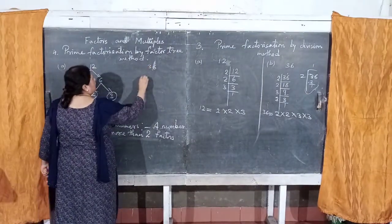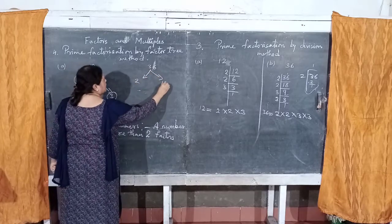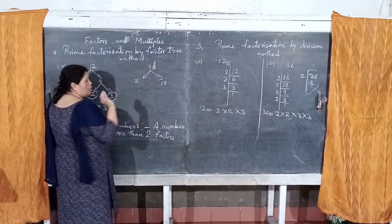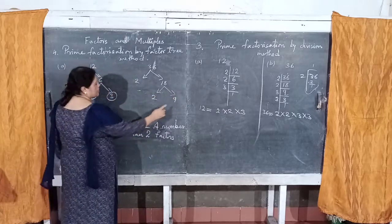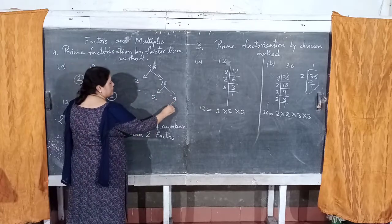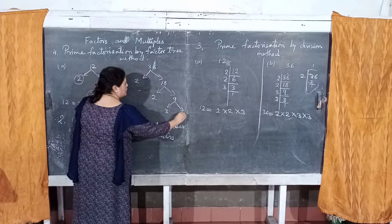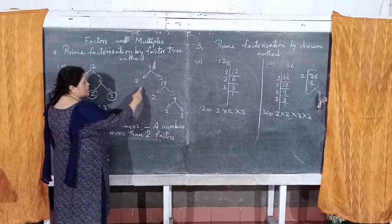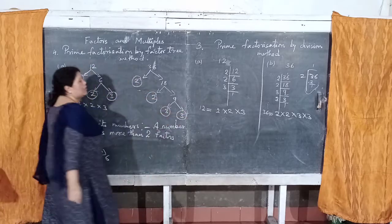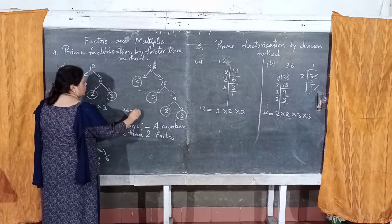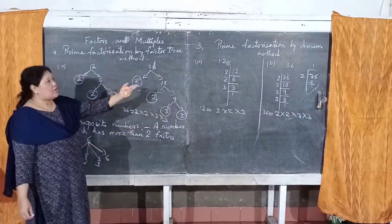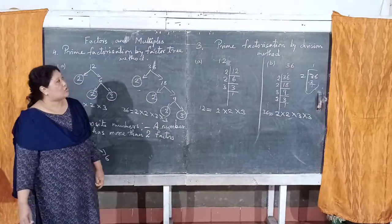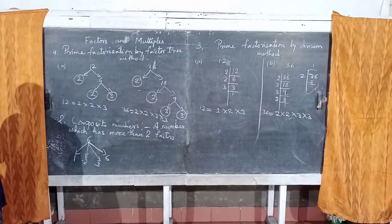Let's also do 36 using the factor tree method. Two times 18 is 36, so 2 is a prime factor. Then 2 times 9 is 18, so another 2 is a prime factor. Now 9 looks complicated, so make it simple: 3 times 3 is 9. So all prime factors of 36 are 2, 2, 3, 3 — that is 2 × 2 × 3 × 3. You can see that is the same result as before. Only the method is different, but the answer is the same.